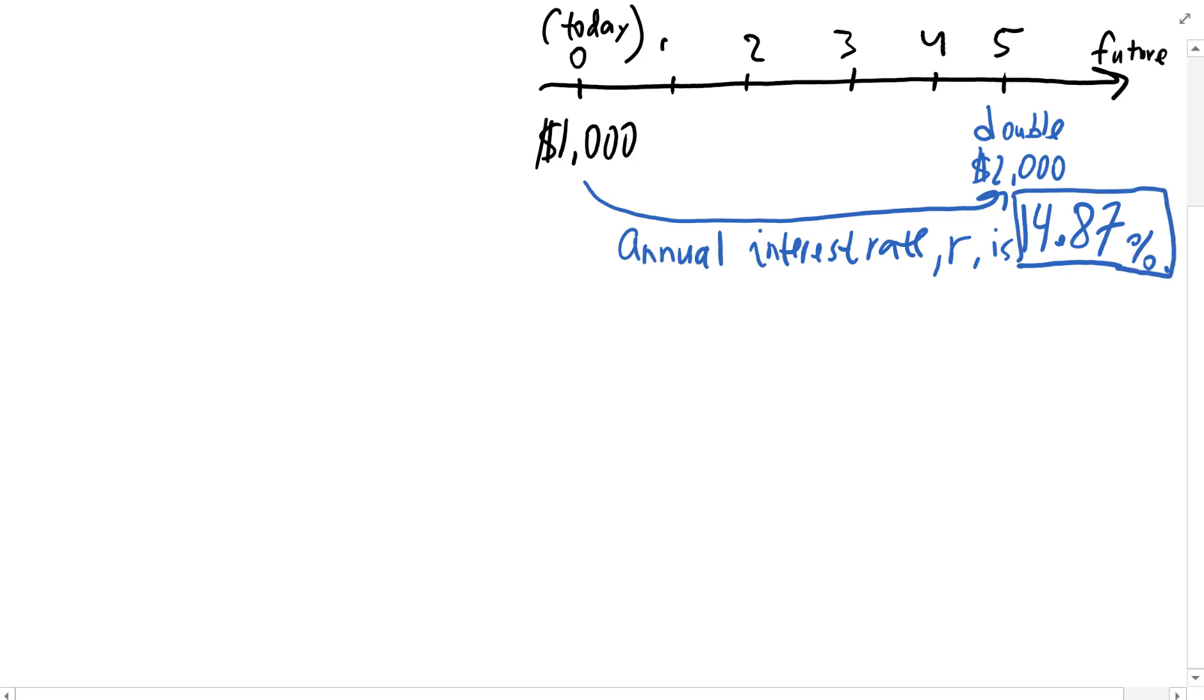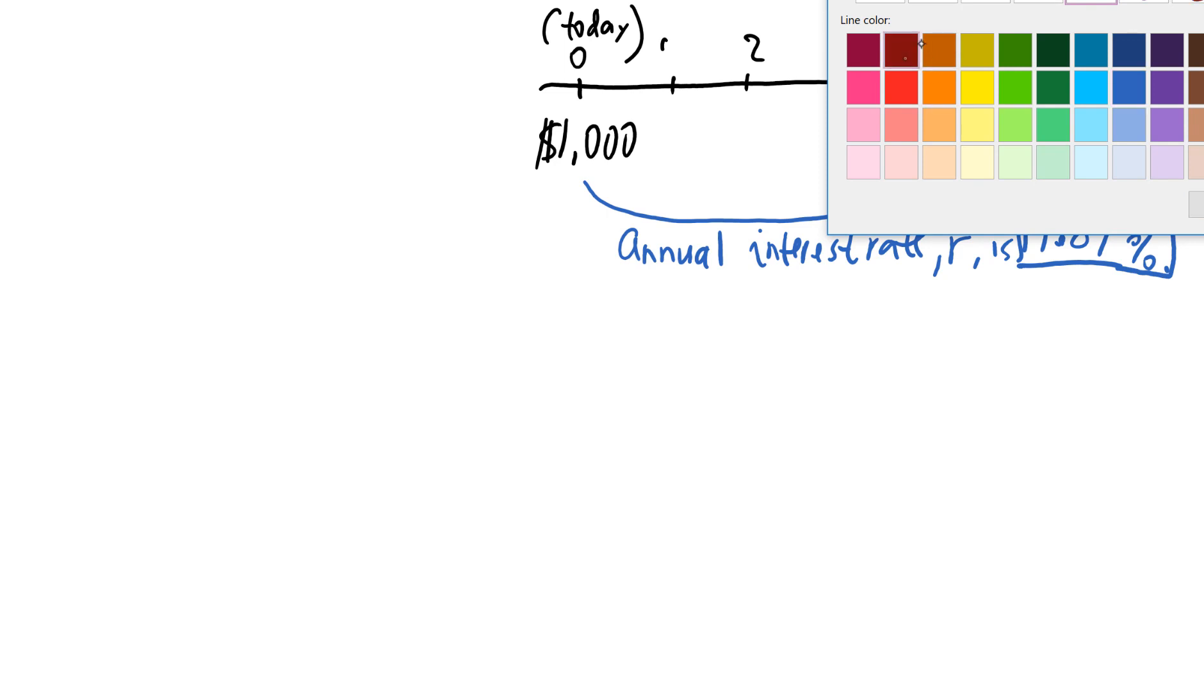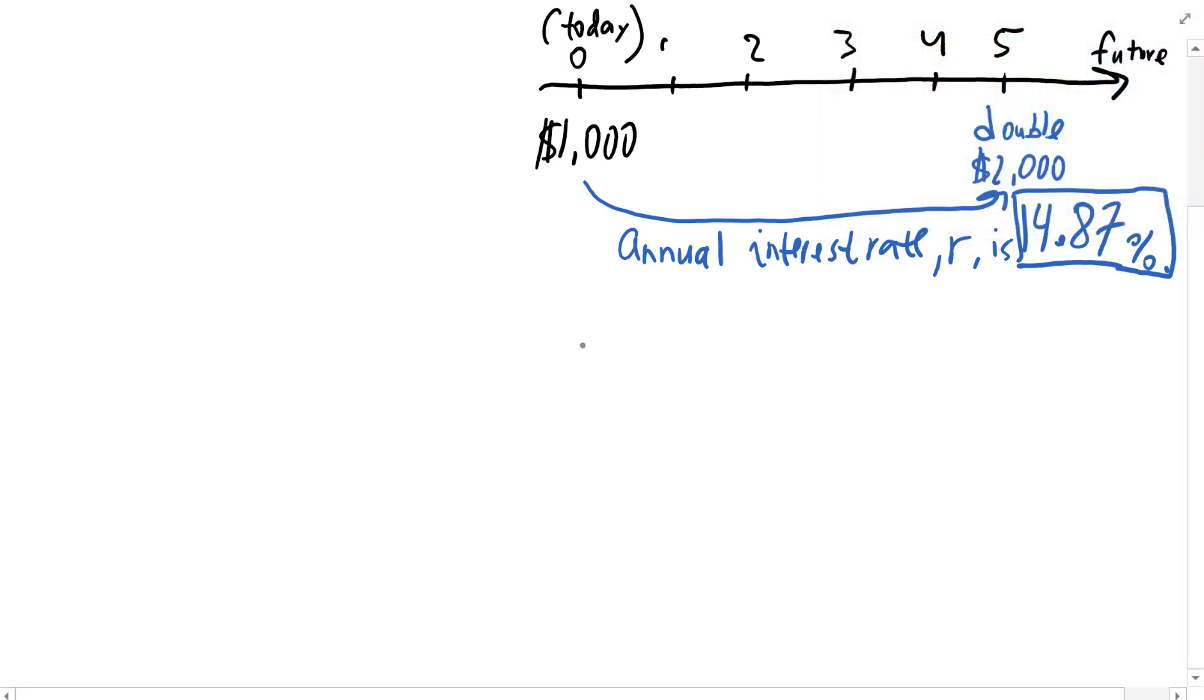Now let's try something extra. Let's say we want to see at which rate it should be growing, $1,000 should be growing for the next five years so that the amount triples. Tripling means it's becoming $3,000 from the original $1,000. So again, what should be the annual interest rate?